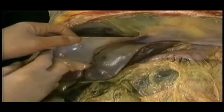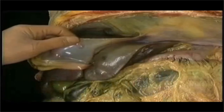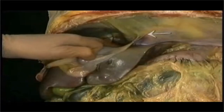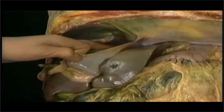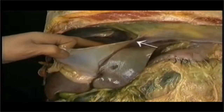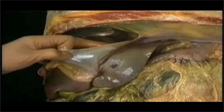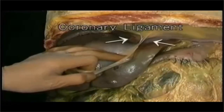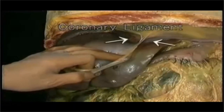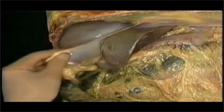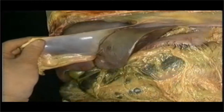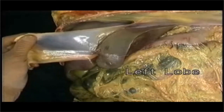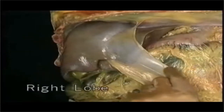In the intact body, this cut edge of the ligament is attached to the underside of the diaphragm along this line. Here it still is attached. That attachment ends back here, where the right and left sides of the falciform ligament diverge, becoming continuous to right and left with this fold of peritoneal attachment — the coronary ligament.